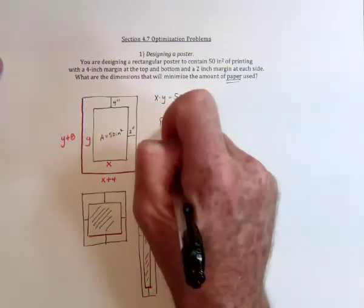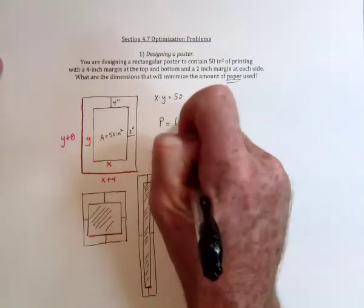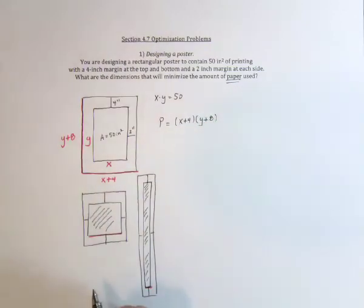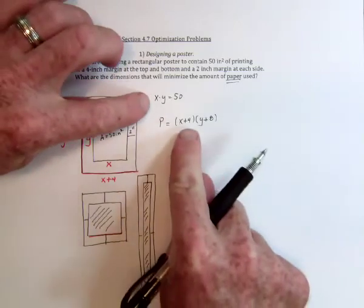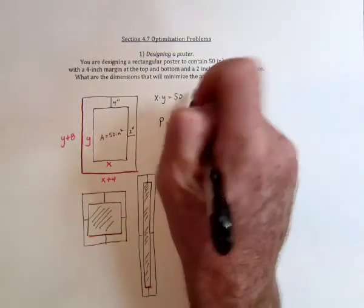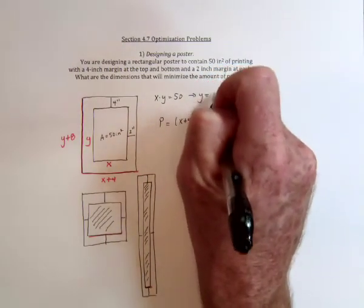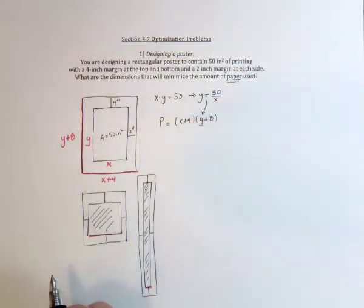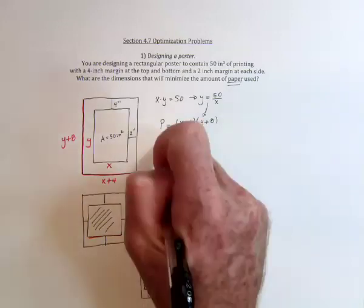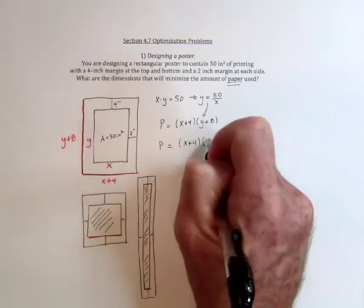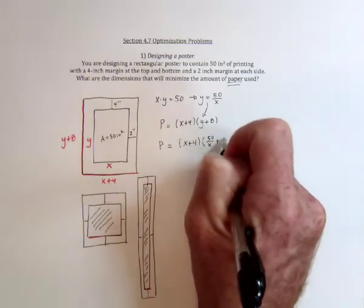So the amount of paper used, P, is going to be x plus 4, and y plus 8. Well, we need to now combine these two, because both of these have to be true. So the way to combine them is, in here, solve for y, and then substitute that into that one, so that we have all of the information into just one function. x plus 4 times 50 over x plus 8.